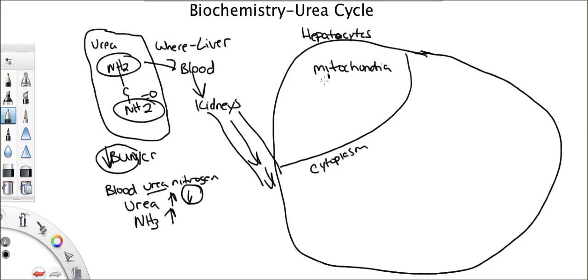So what's the first step? We have CO2 plus NH4. This is converted into carbamoyl phosphate. What enzyme does this step here? Carbamoyl phosphate synthetase 1. What's so important about this enzyme? It's the rate-limiting enzyme. That is the most important thing.